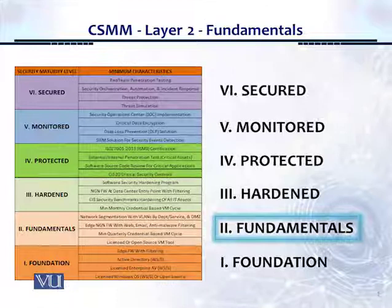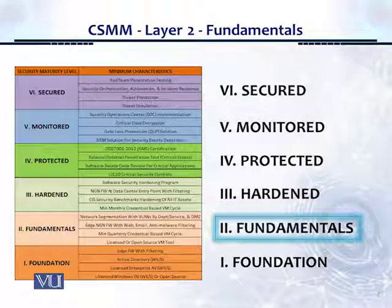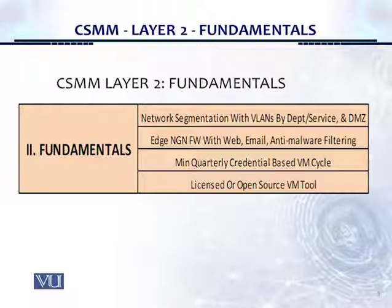As we have discussed, the Cybersecurity Maturity Matrix is a proactive, structured, sequential framework so that security can be categorized and implemented in a consistent manner. We're going to take a look at layer 2, called Fundamentals. The controls present in layer 2 include: a Licensed or Open Source Vulnerability Management Tool; a minimum quarterly credential-based vulnerability management cycle; an edge next-generation firewall with web, email, and anti-malware filtering; and network segmentation with VLANs by department, service, and DMZ.